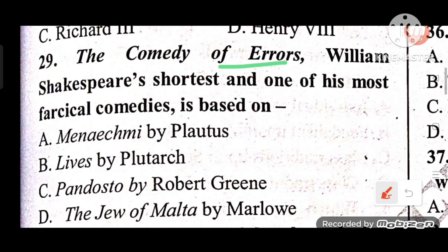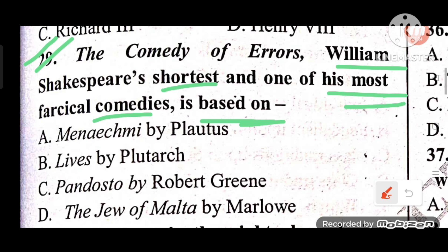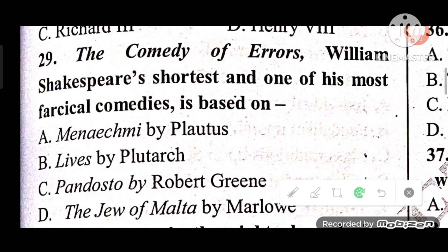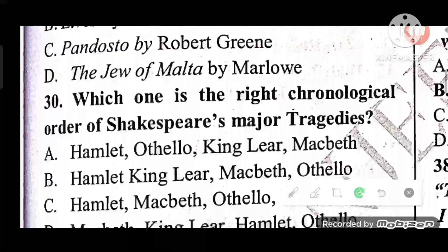Question 29: The Comedy of Errors, considered one of Shakespeare's most farcical comedies, is based on which source? Options: A) Menaechmi by Plautus, B) Lives by Plutarch, C) Pandosto by Robert Greene, D) The Jew of Malta by Marlowe. The answer is A — Menaechmi by Plautus.